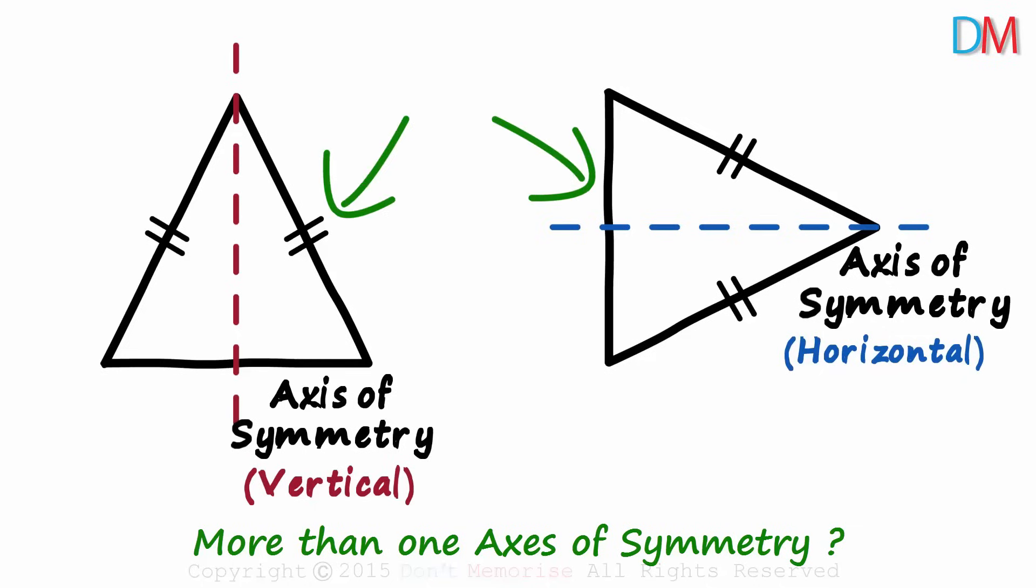If you look at just these two triangles, you would probably say no. Because there is no other line which can divide these triangles into two parts that match exactly. But the correct answer is that a shape can have more than one axis of symmetry.